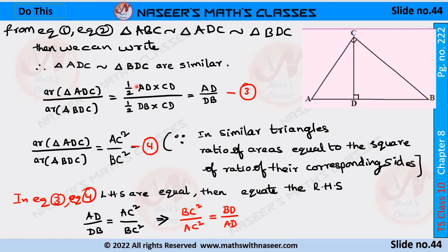The half and CD cancel from both, so the ratio of area of triangle ADC to area of triangle BDC simplifies to AD by DB. Let this be equation 3.